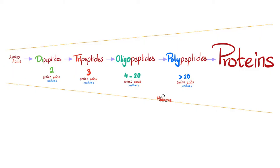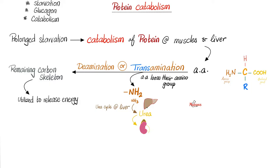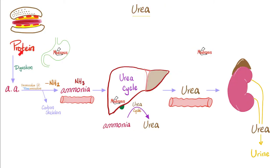Proteins are made of amino acids: two amino acids form dipeptides, then tripeptides, oligopeptides, polypeptides, and finally proteins. To break down proteins, go the opposite direction. After eating proteins, they are digested into amino acids. By deamination and transamination, the amino group leaves to become ammonia. The liver converts ammonia into urea via the urea cycle. Urea leaves the liver, goes to the blood, and the kidney excretes it into urine.